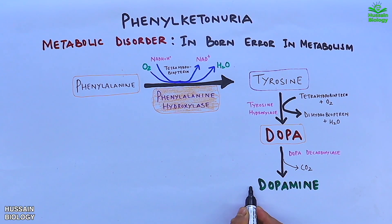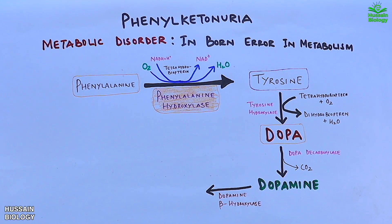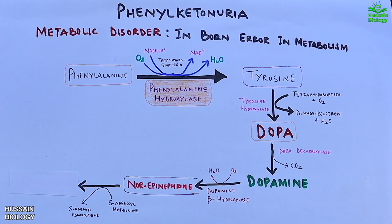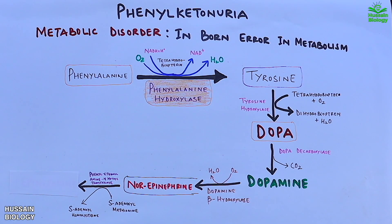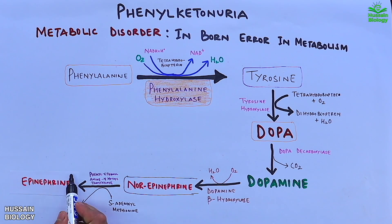Dopamine beta-hydroxylase acts on dopamine and converts it into norepinephrine. In the last step, phenylethanolamine N-methyltransferase enzyme acts on norepinephrine in the presence of S-adenosyl methionine and converts it into epinephrine.